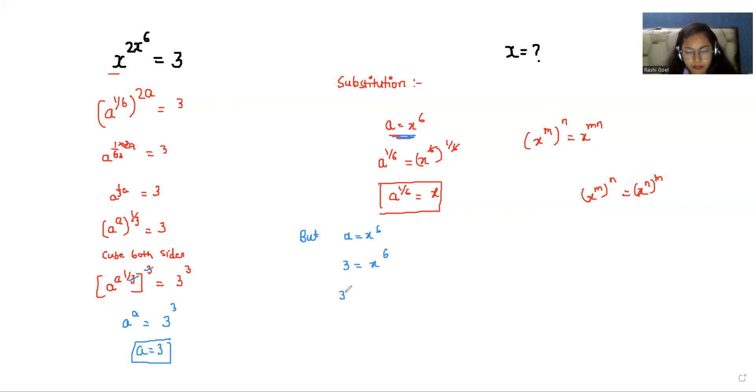So I multiply 1/6 to both the power. So we get x^6 power 1/6. So eliminate the 6 with 6. So 3^(1/6) equals x. So the final value of x is 3^(1/6).